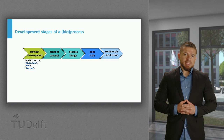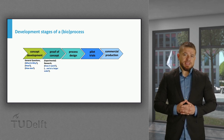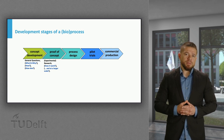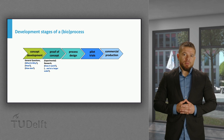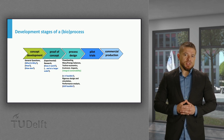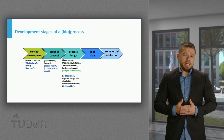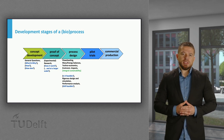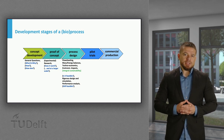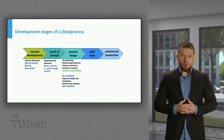The next stage is proof of concept, where those initial ideas are experimentally tested to confirm if the concepts actually work. We can then move on to the process design stage, where multiple processing concepts are generated and assessed through flow sheeting, mass and energy balances, techno-economic evaluation, environmental impact assessment, and in some cases social impact analysis. An integral sustainability analysis is also possible at this point.